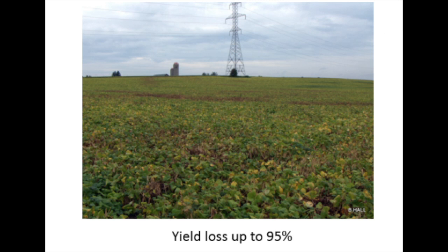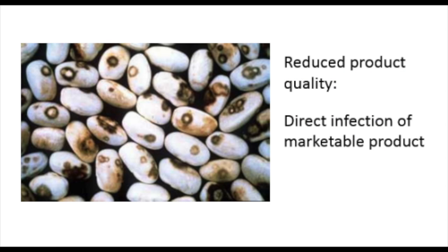Bean anthracnose is recognized in an assessment of pest management by Gerard Peinenberg et al. in 2011 as one of the most devastating diseases in dry bean production worldwide, as it can reduce yield by up to 95% and reduce product quality by directly infecting the marketable seeds.